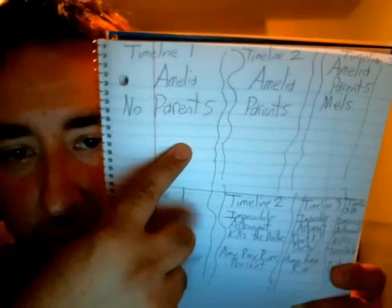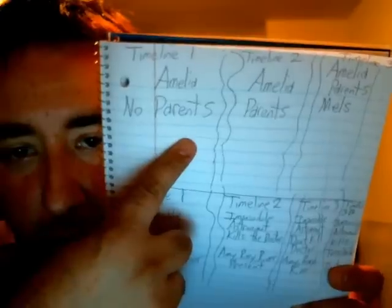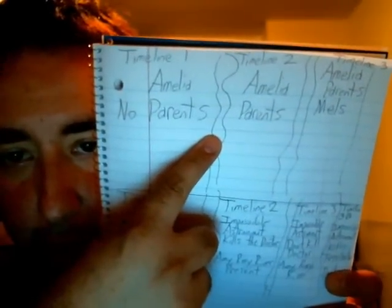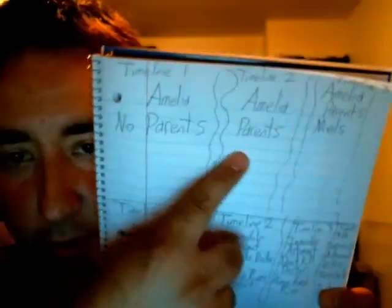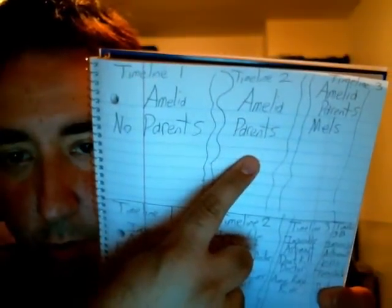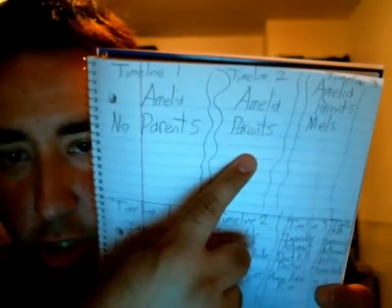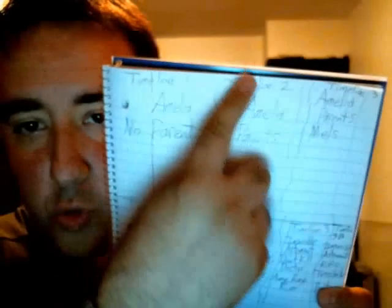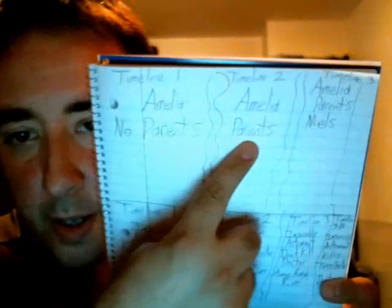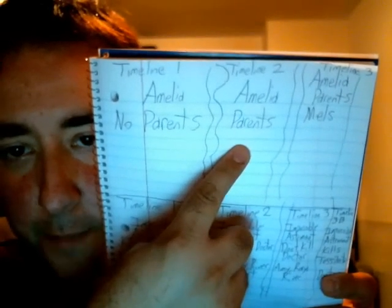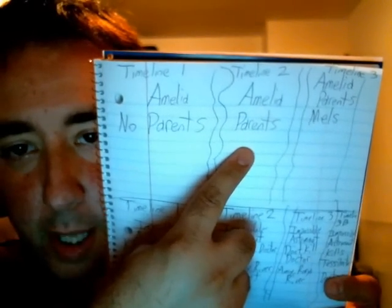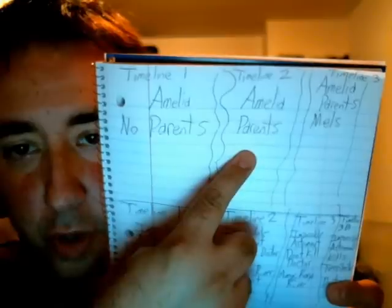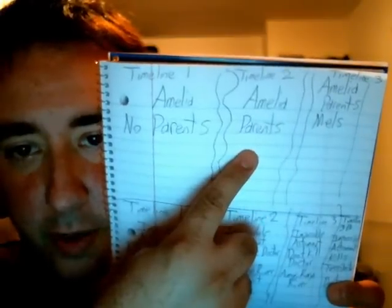At the end, the Doctor goes into the crack, and then pops out in Timeline 2. It's another universe — another universe where, at the end of the Big Bang, the universe is rebooted, a brand new universe, and Amelia Pond's parents are there.